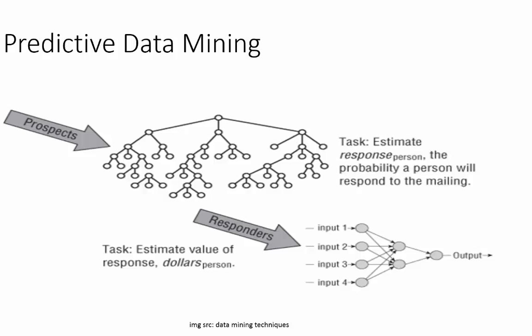Note that the two models are built using different model sets and different subjects. The response model is based on historical data of everyone exposed to the campaign, and the target is whether or not the individual responded. The estimated spend model is built only on those customers who responded, and the target is the amount the individual actually spent on the product.